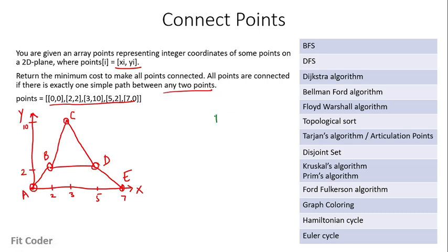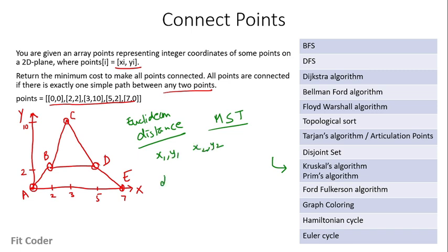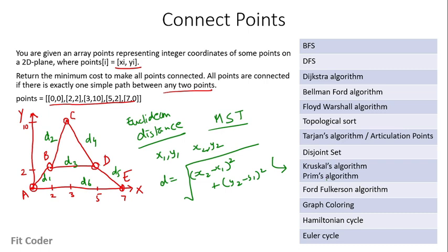This is essentially finding the minimum spanning tree, so we can use Kruskal's or Prim's algorithm. For distances between vertices we use the Euclidean distance: if two vertices are at (x1, y1) and (x2, y2), the distance is the square root of (x2−x1)² + (y2−y1)². We calculate distances for each pair of vertices and then find the MST using Kruskal's or Prim's, which gives us the minimum cost to connect all points.